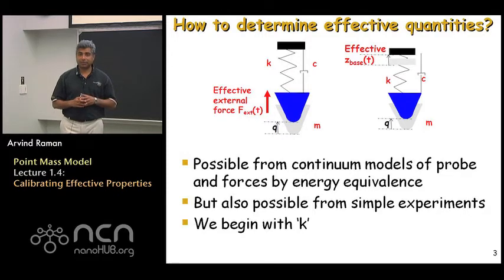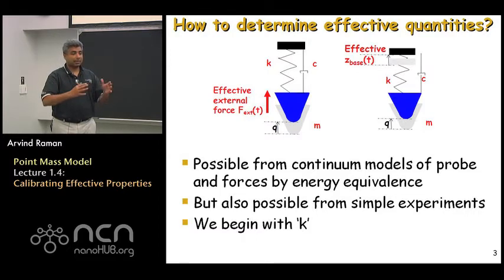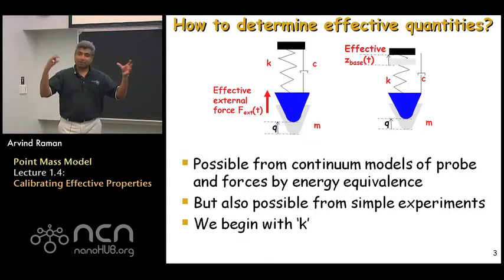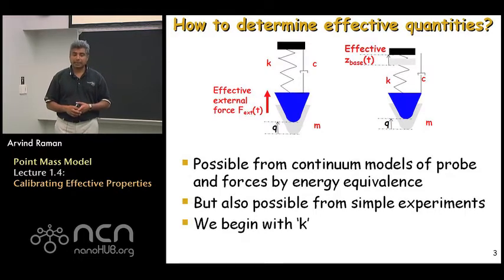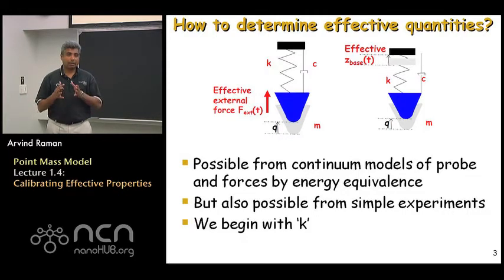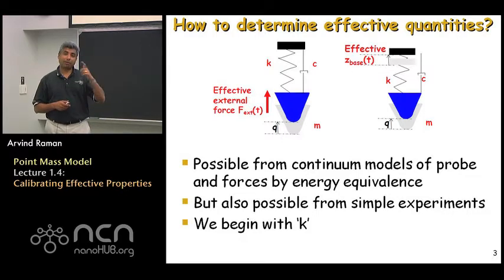We can get at these effective values through fundamental theoretical models of these beams using Euler-Bernoulli theories, taking actual shapes into account, and modeling magnetic forces. But as experimentalists we are also interested in determining these quantities in a self-consistent way through simple experiments. This is what is very commonly done in practice, and so today we are going to go over the key methods to determine these effective quantities required for an accurate, high-fidelity point mass oscillator model with excitation for the AFM probe. We will begin with k, the effective spring constant, and then describe how the rest of the quantities can be worked out.